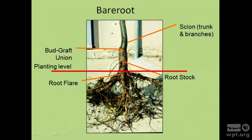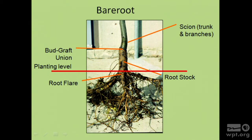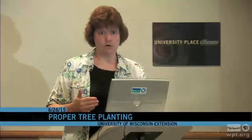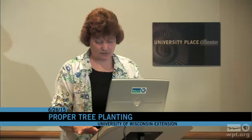Here's a better shot of a bare root tree. In this case it's grafted—not all trees are grafted, but all fruit trees are. The scion contains the trunk and branches of the tree, and below the graft union is where the root flare is—that's your planting level. A lot of people might mistake the graft area as the planting depth, but you need to plant at the root flare, which should be at or slightly above ground level.